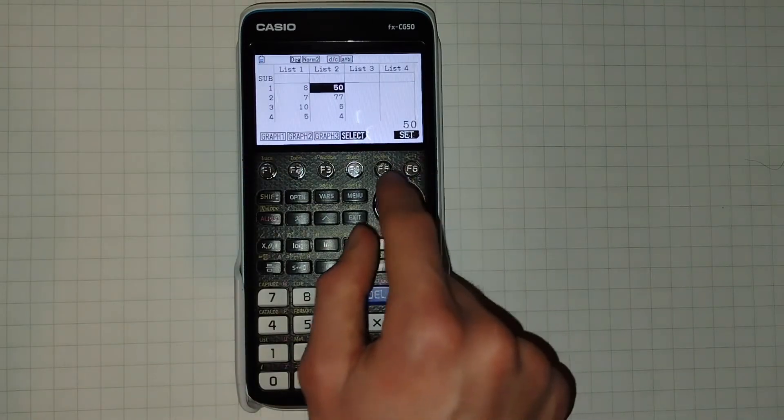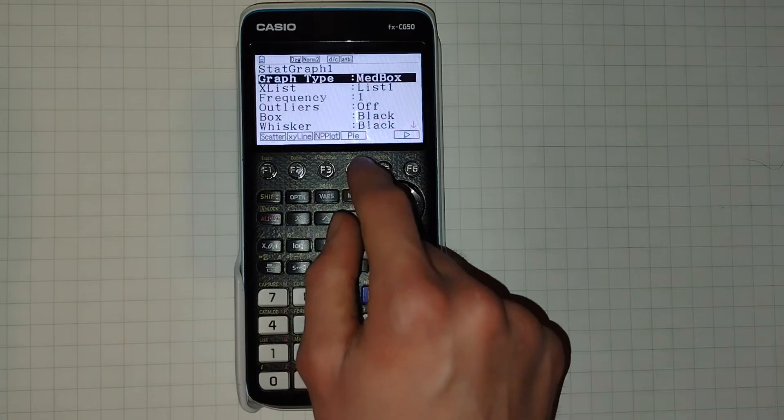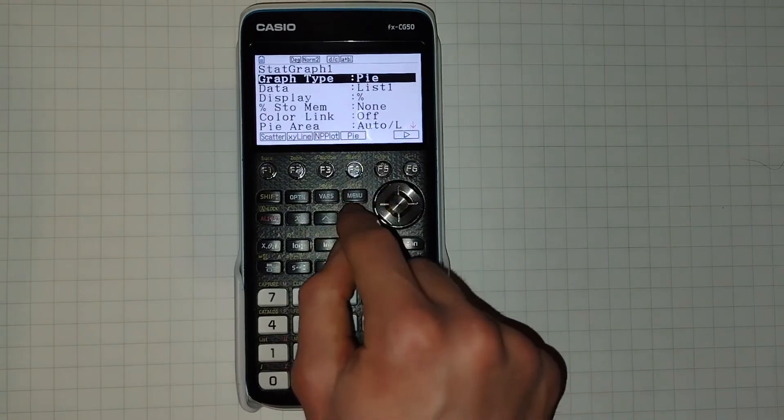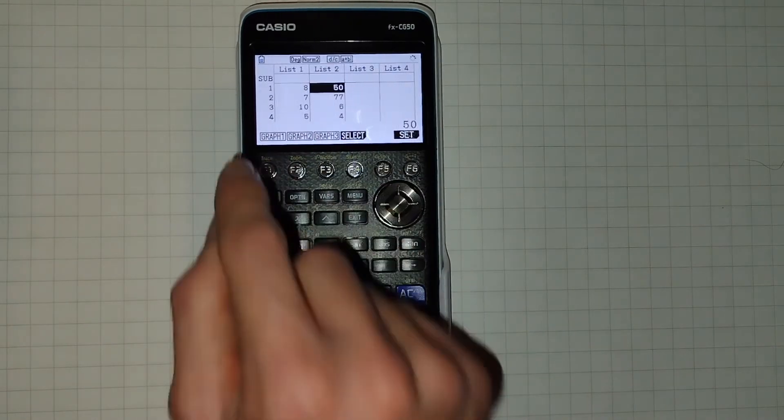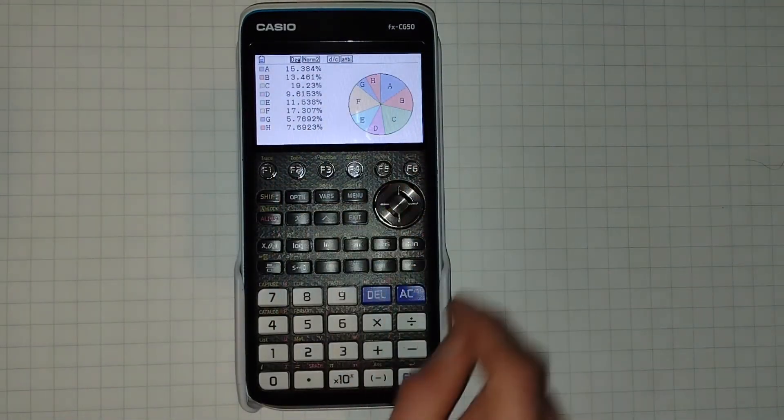And entering back into the graph mode and clicking F6 for set, let's now plot a pie chart of our new frequency table data. And here we go, a nice pie chart showing our data.